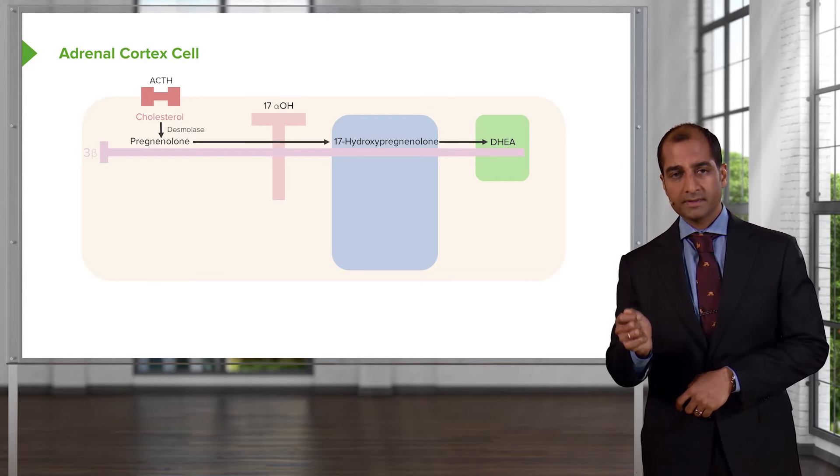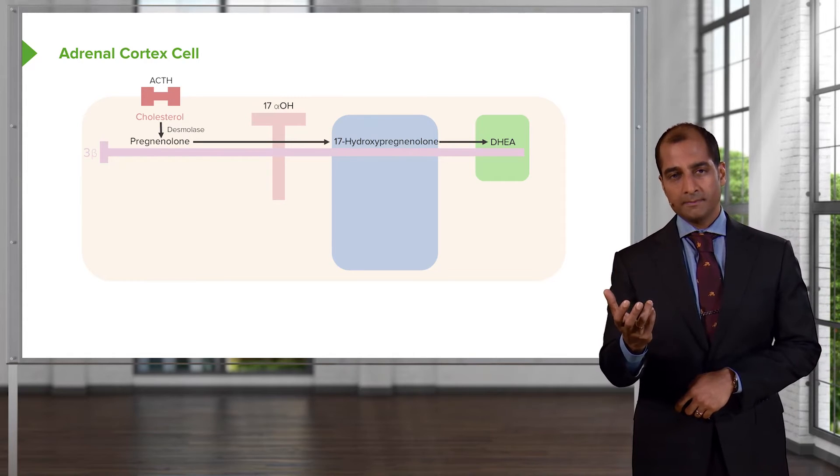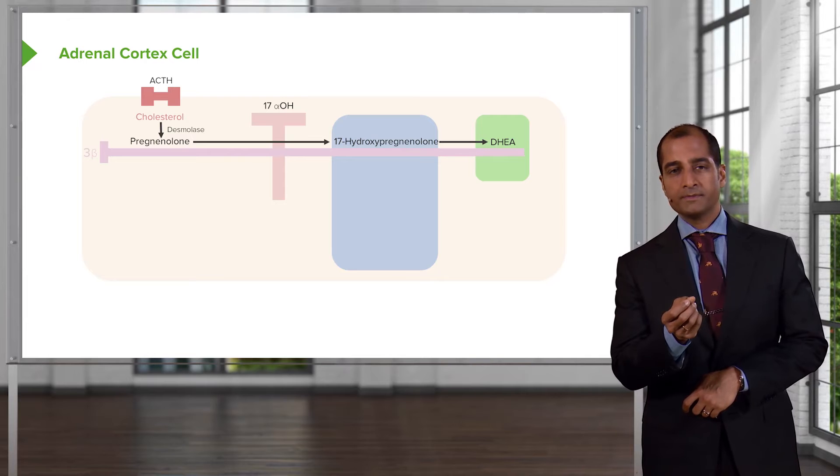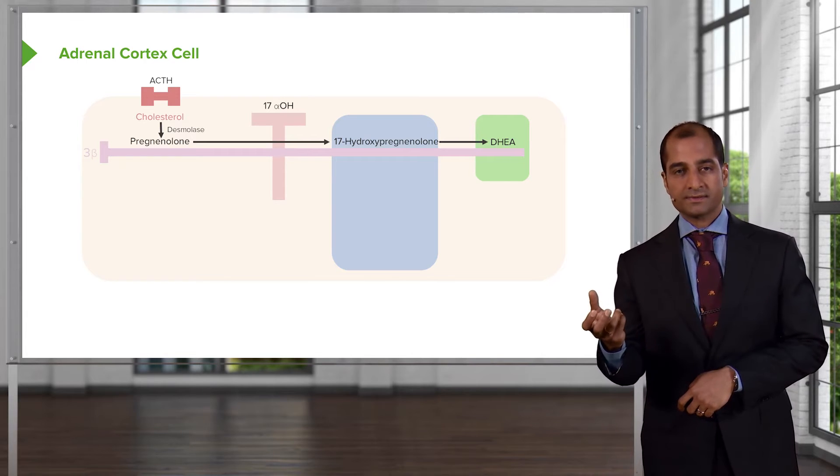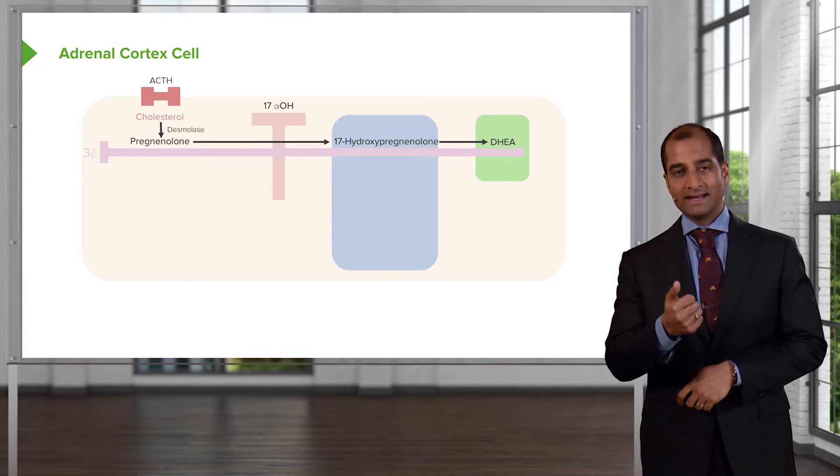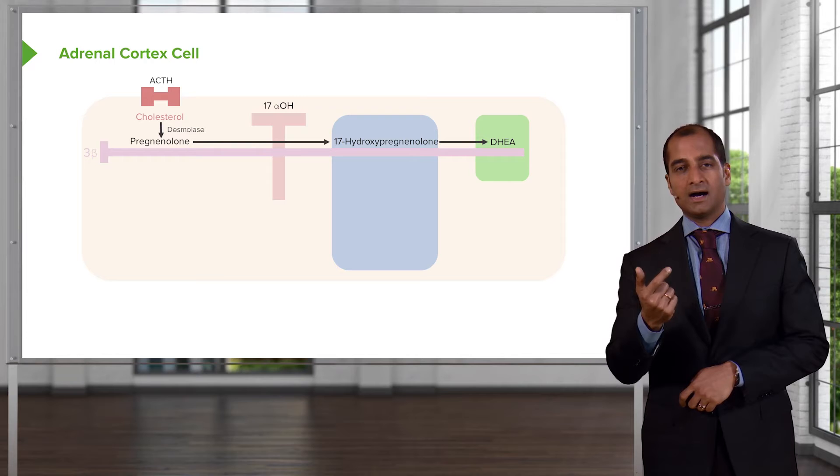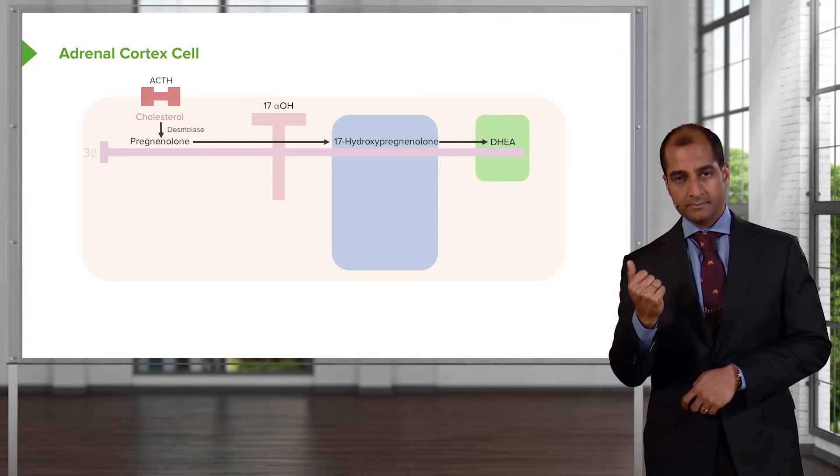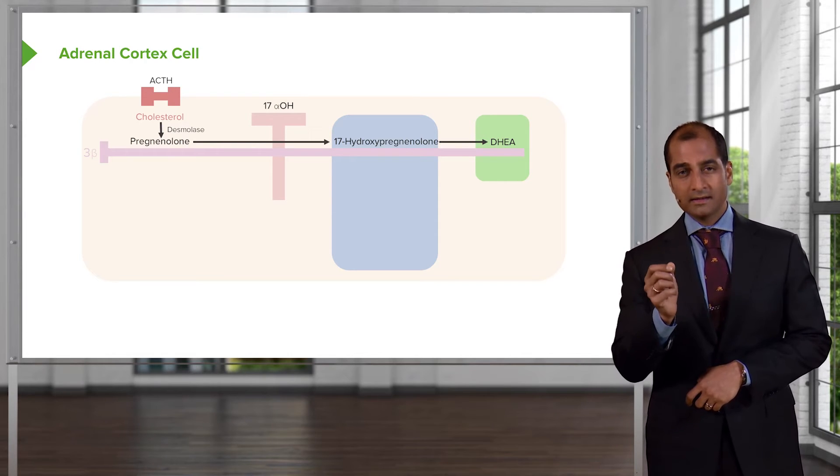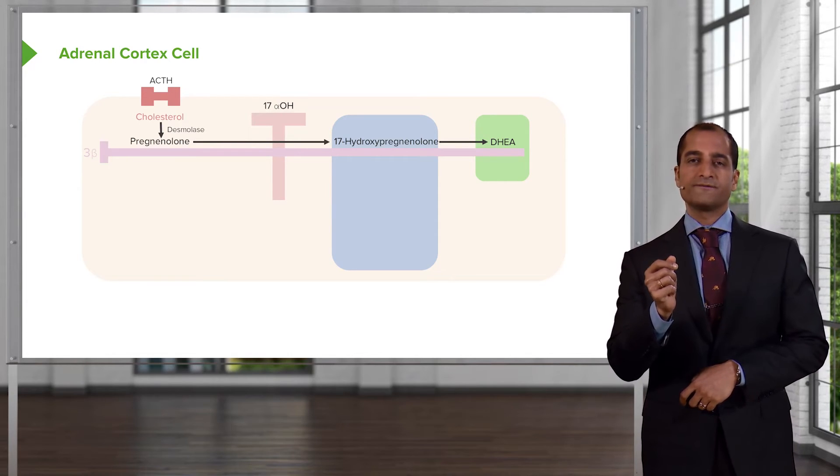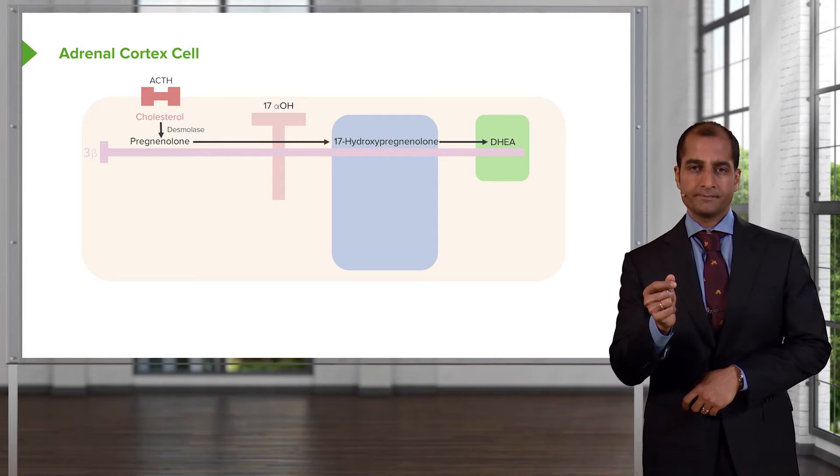That's important because you know that aldosterone and its major feedback is going to be with whom? You've heard of the acronym RAS. Renin, angiotensin, aldosterone. So renin, clinically, will be the most important feedback for you with aldosterone. Let's move on.